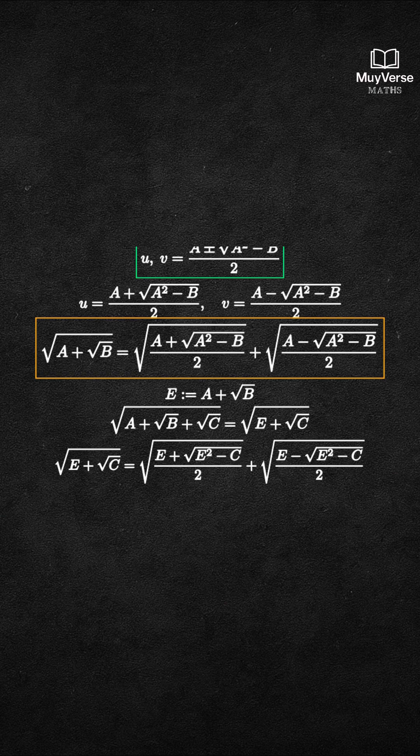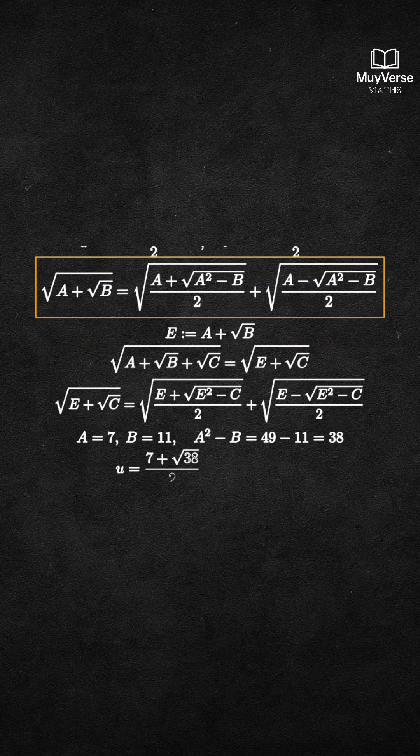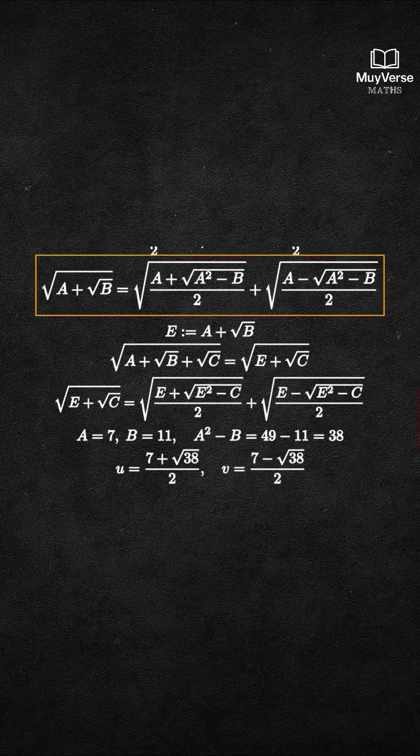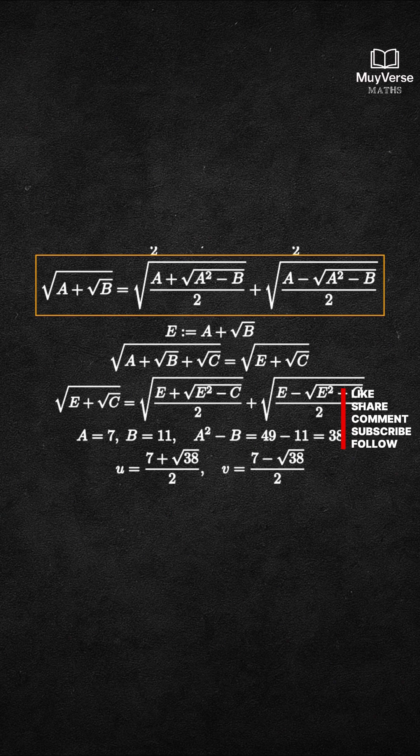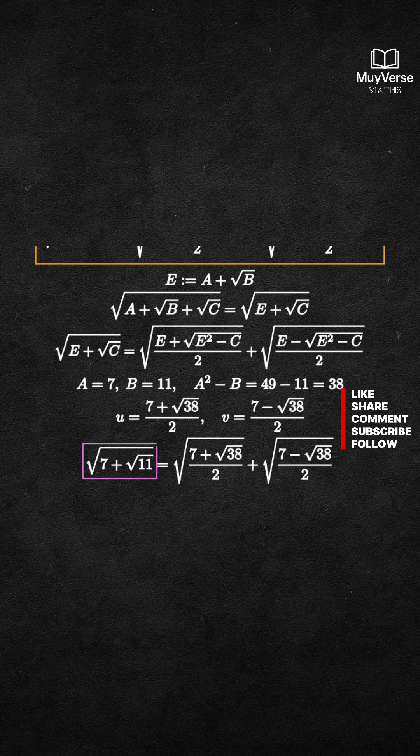Concrete example. Let a equal 7 and b equal 11. Compute a squared minus b equals 49 minus 11 equals 38. So u equals 7 plus square root 38 over 2. And v equals 7 minus square root 38 over 2. Therefore square root of 7 plus square root of 11 equals square root of u plus square root of v.